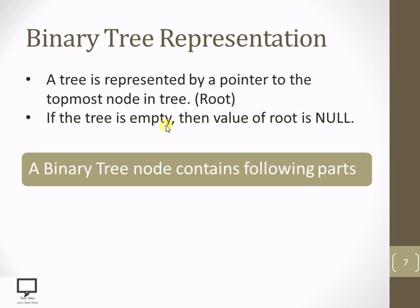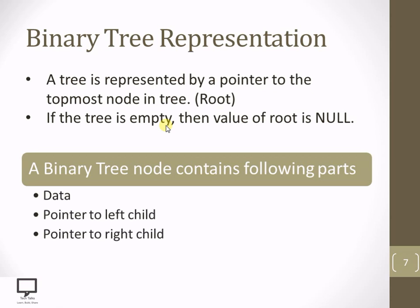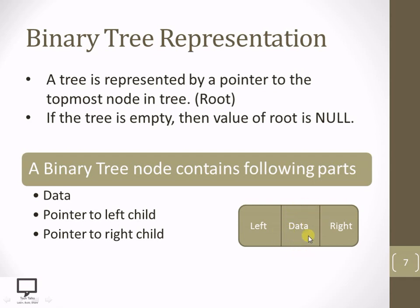A binary tree node is divided into three parts. The first is the data part or information part. Every node also has a left child pointer and a right child pointer — it may have both, one, or neither. The data part stores the information, such as 'A' in the root node example. The left child pointer holds the address of the left child, and the right child pointer holds the address of the right child.